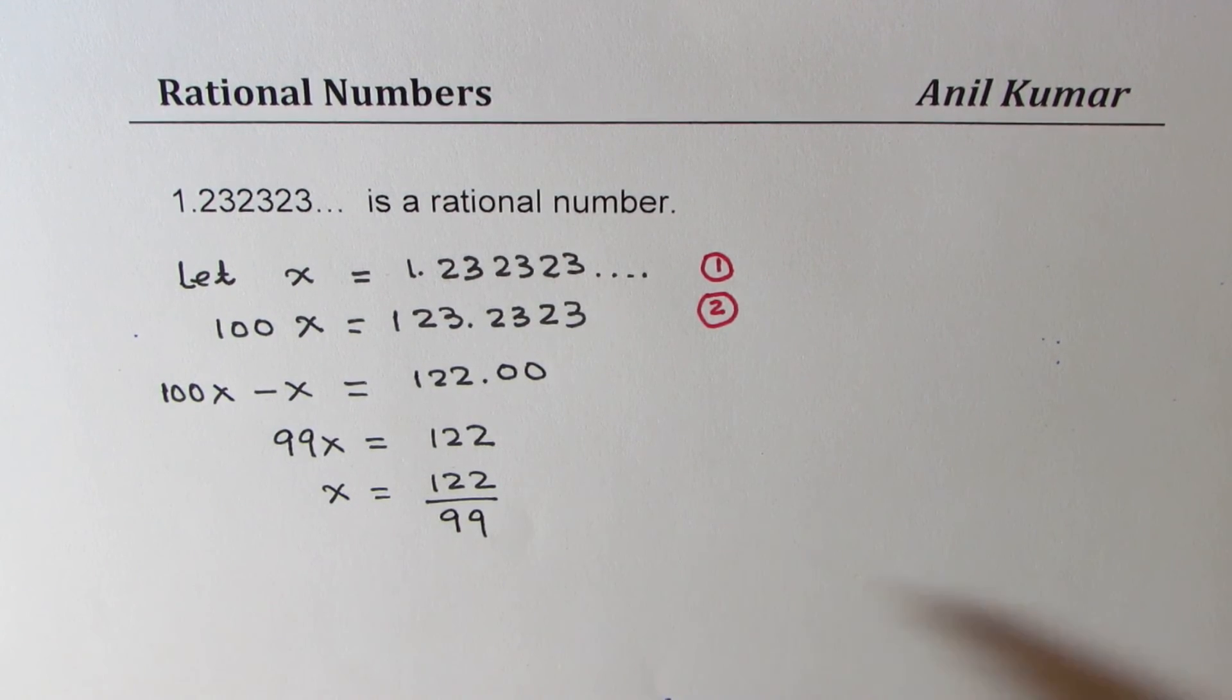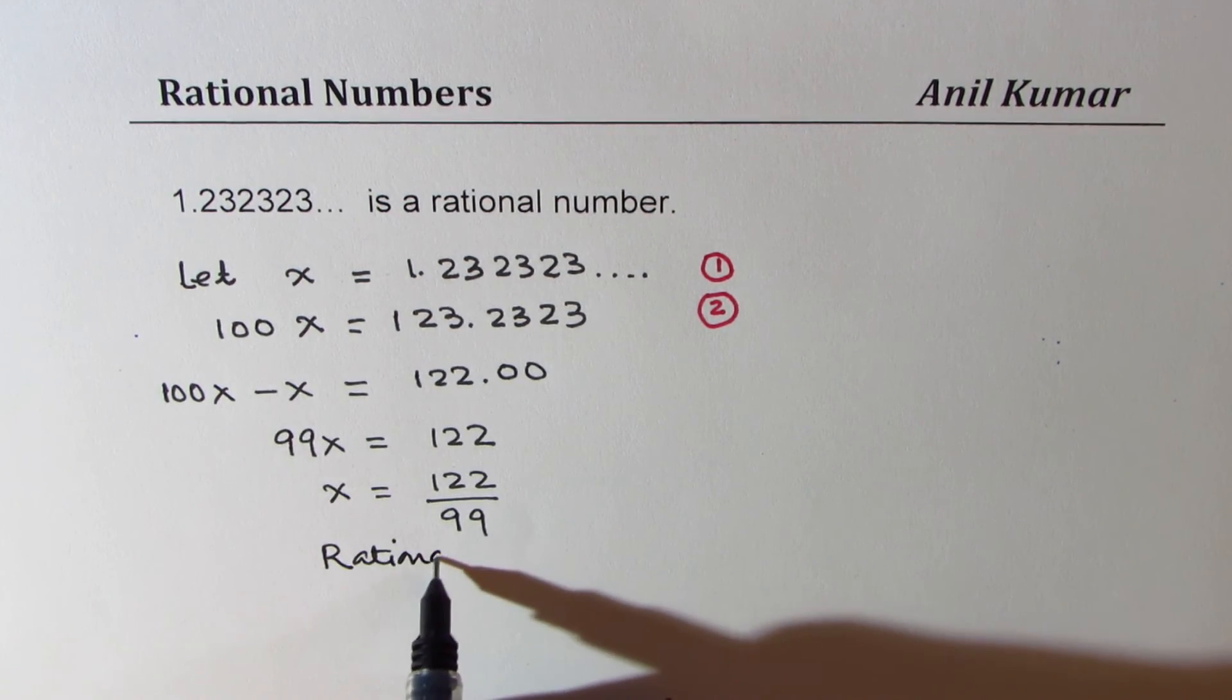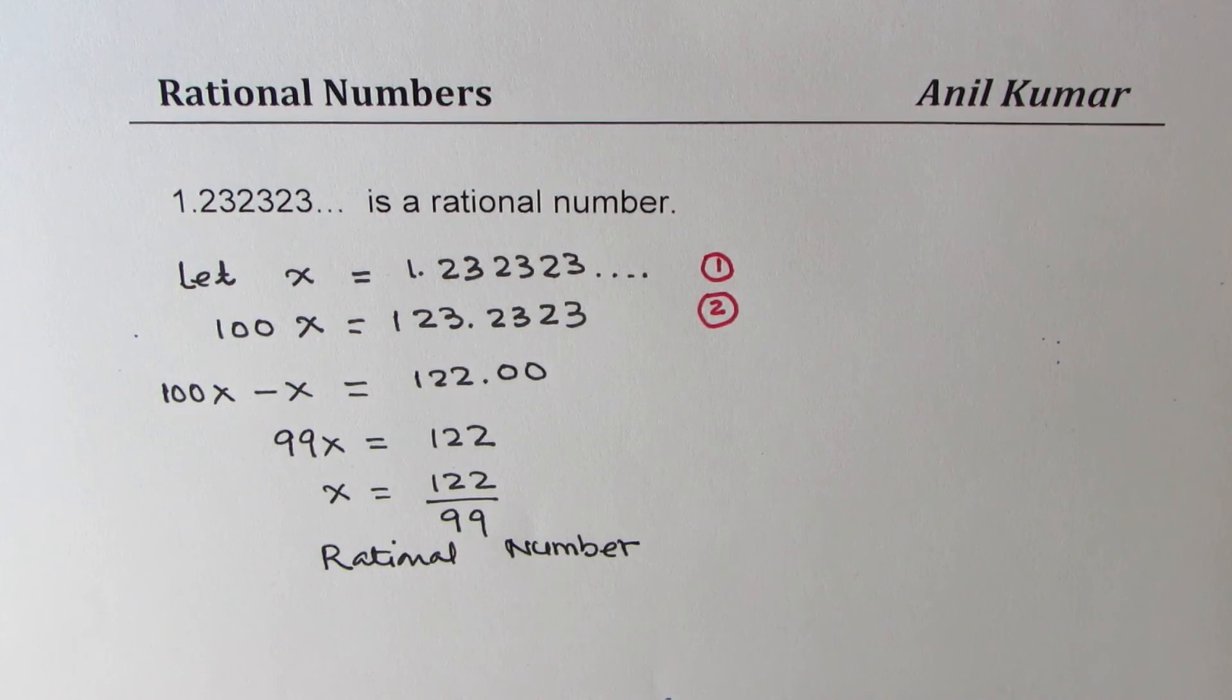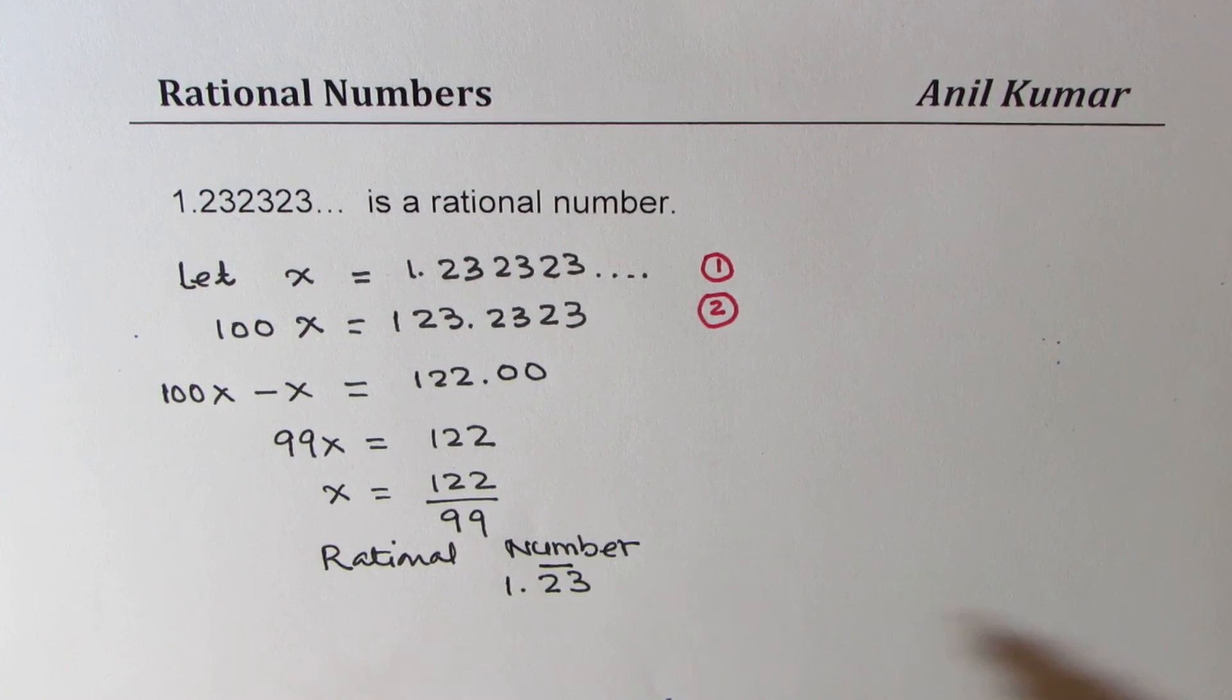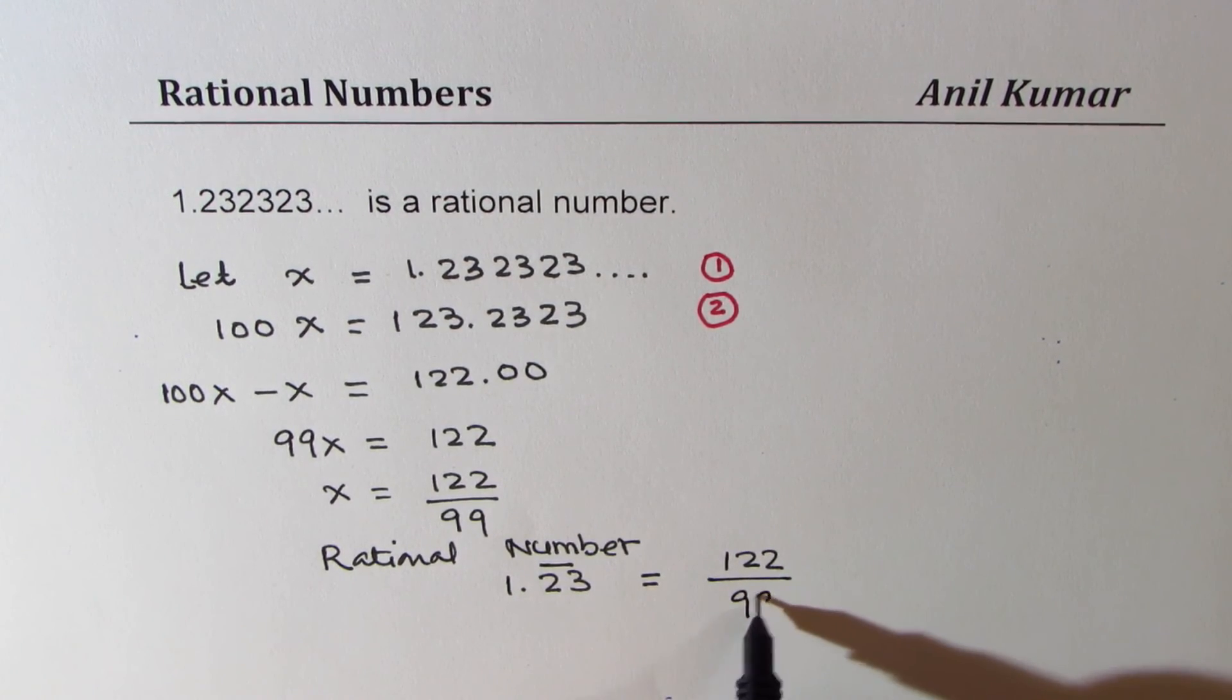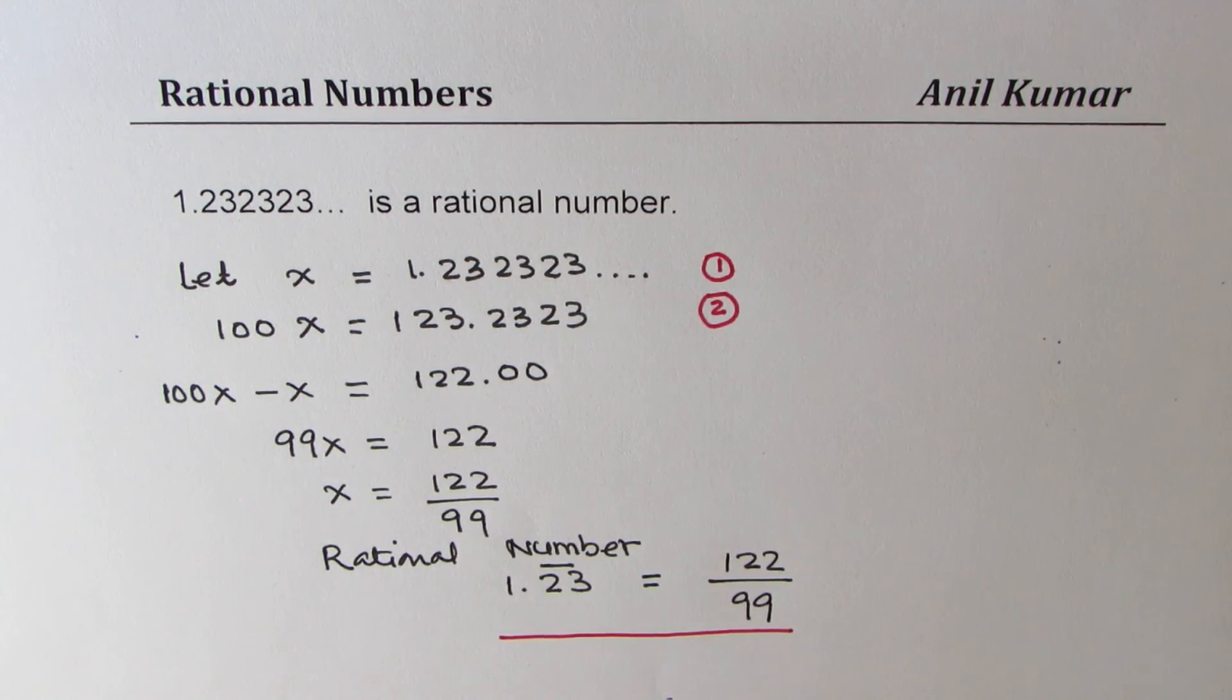Perfect. Now, that is a rational number. Do you agree with me? So we could write 1.23 with a bar here saying it is repeating as equal to 122 over 99. So we have shown that how the repeating decimal numbers can be written as a rational number. Perfect. So I hope that's simple and straightforward.